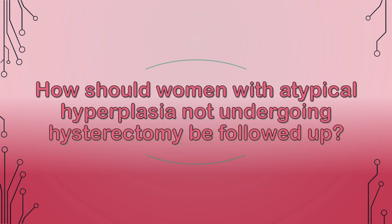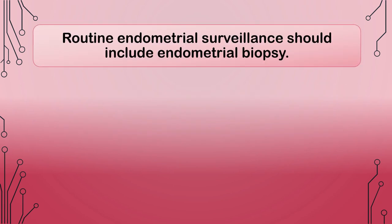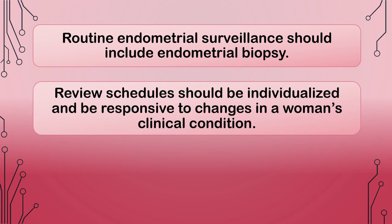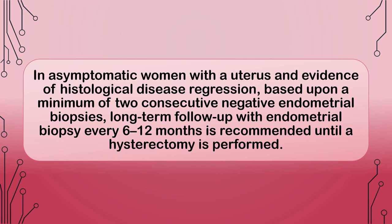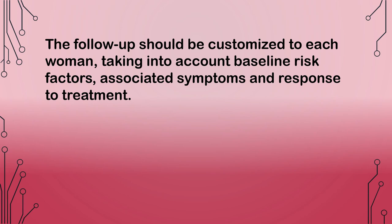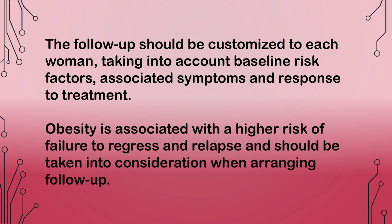How should women with atypical hyperplasia not undergoing hysterectomy be followed up? Routine endometrial surveillance should include endometrial biopsy. Review schedules should be individualized and responsive to changes in a woman's clinical condition. Review intervals should be every 3 months until 2 consecutive negative biopsies are obtained. In asymptomatic women with evidence of histological disease regression based upon a minimum of 2 consecutive negative endometrial biopsies, long-term follow-up with endometrial biopsy every 6 to 12 months is recommended until a hysterectomy is performed. The follow-up should be customized to each woman taking into account baseline risk factors, associated symptoms, and response to treatment. Obesity is associated with a higher risk of failure to regress and relapse and should be taken into consideration when arranging follow-up.